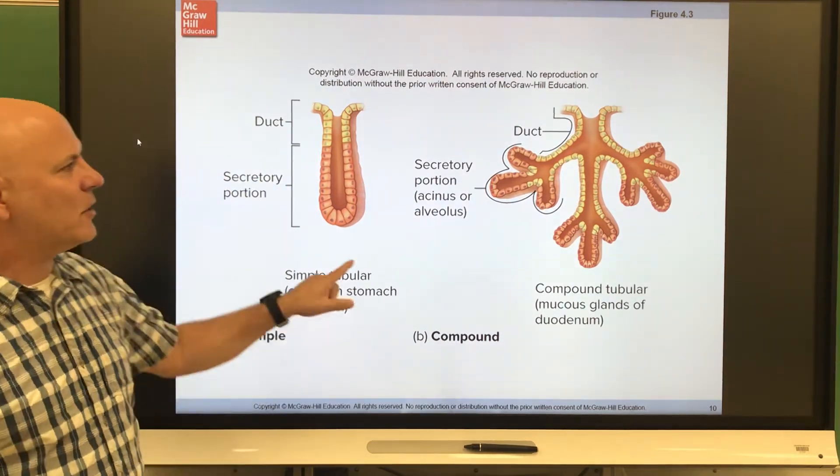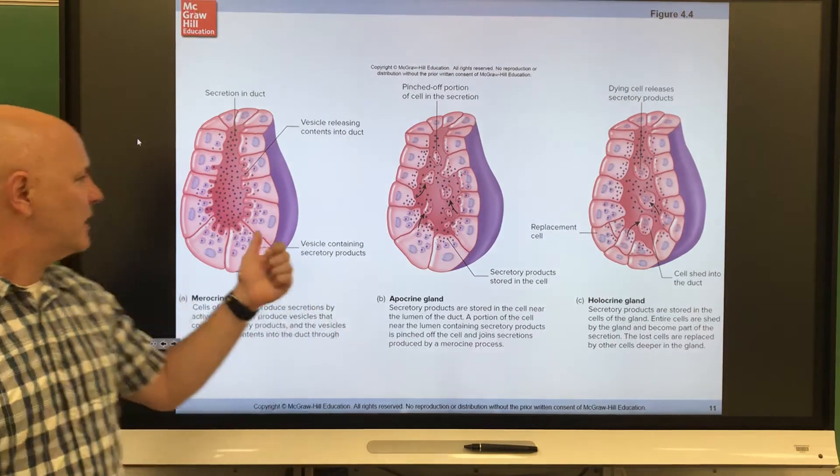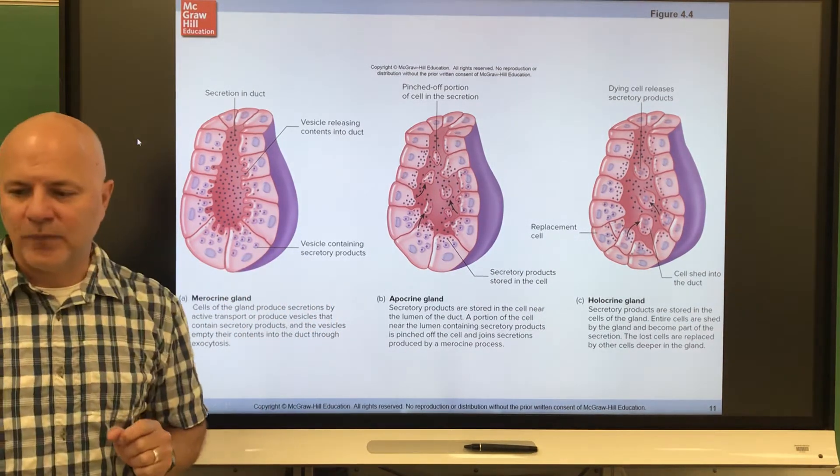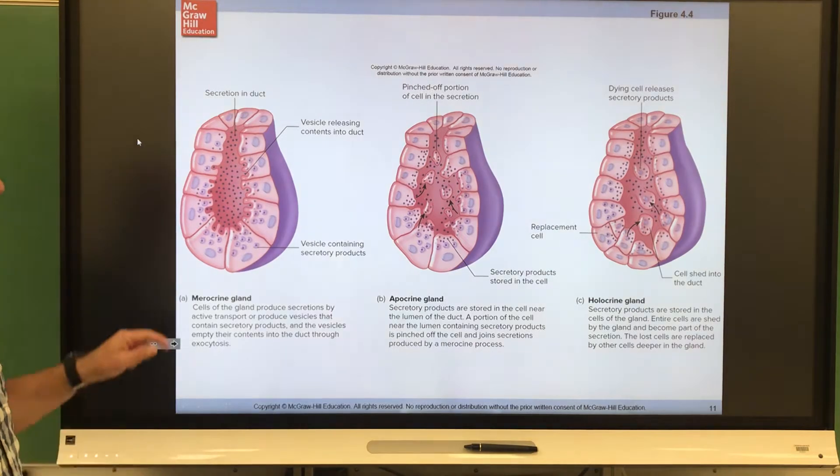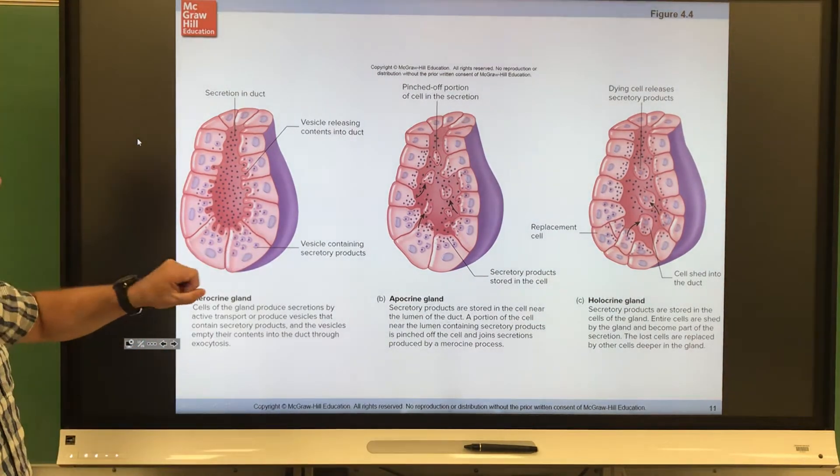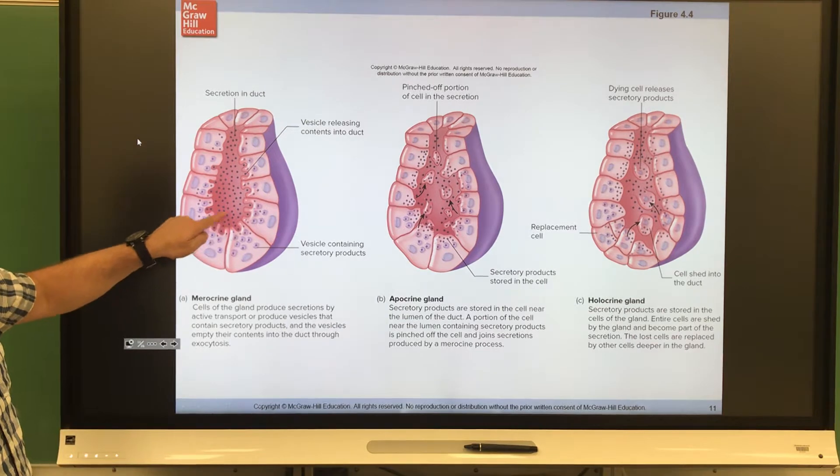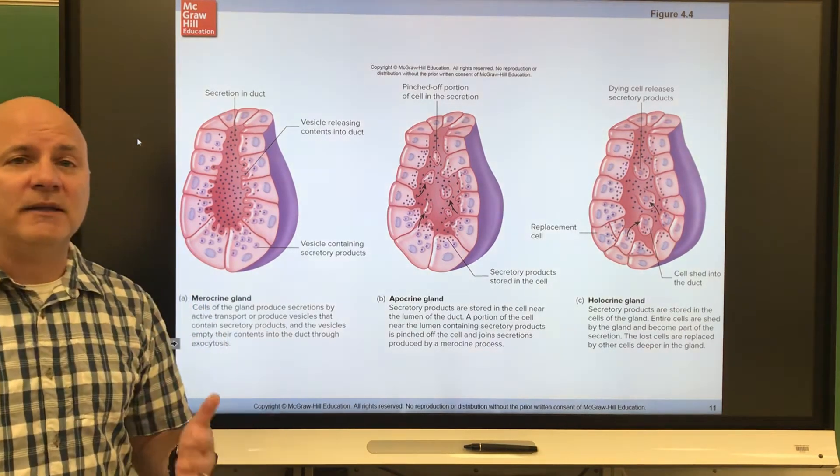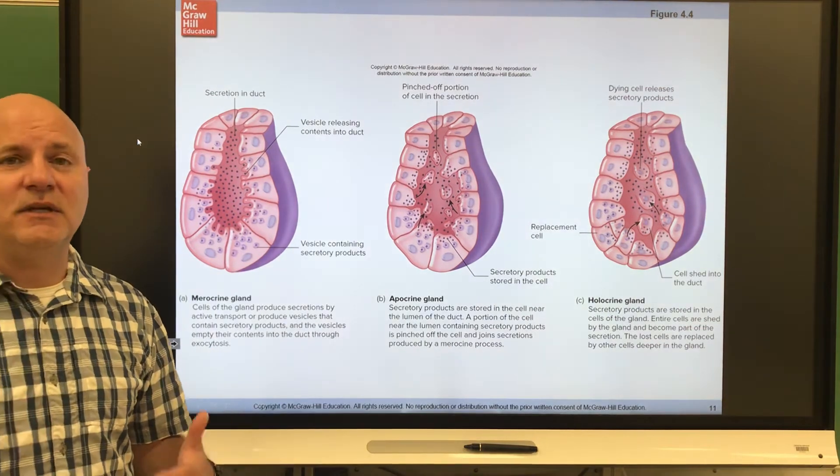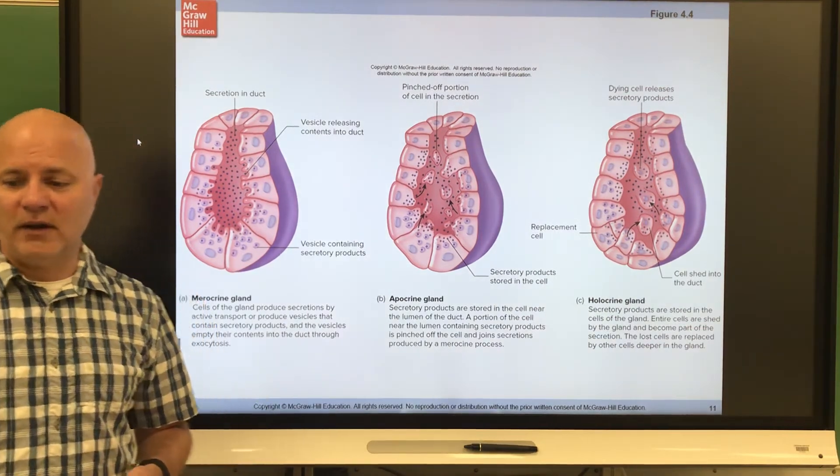So the first are called merocrine glands. So that's like these guys over here are merocrine glands. So these are glands that release products by exocytosis. So they're going to produce a product in a vesicle. That vesicle is going to fuse with a plasma membrane and then release those products outside of the cell. So this is sweat glands, lacrimal glands with tears, and salivary glands with saliva.